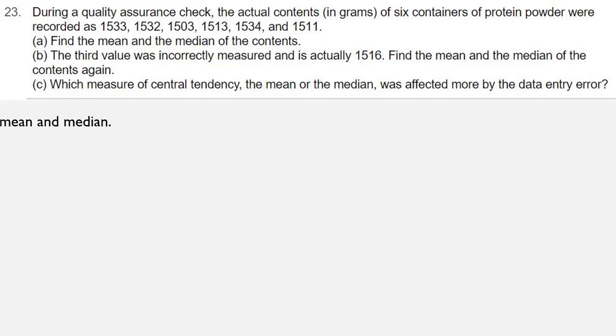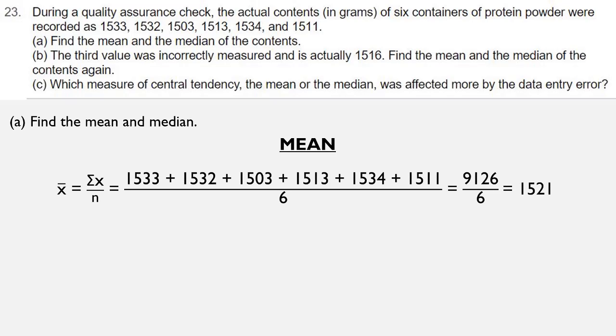So we'll start with part A, finding the mean and median. To find the mean, I use the formula sigma of x over n, which is the sum of the x values over the number of data entries. So I add up those six data entries and then divide by six. Adding those six entries gives me 9126, and 9126 divided by six is 1521. So the mean here is 1521.